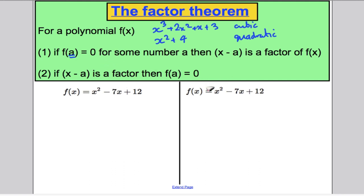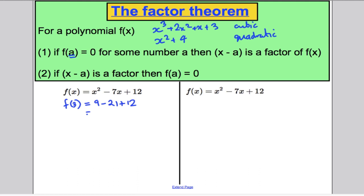I want to show you both directions with two examples. Going the first way: if I can find a number that makes the polynomial zero, I know x minus that number is a factor. Say I try various numbers and eventually get to the number 3. I work out that f of 3 is 9 minus 21 plus 12, substituting 3 in — and that equals 0. This tells me that x minus 3 is a factor.